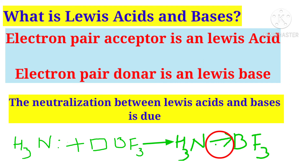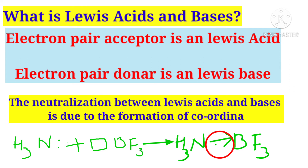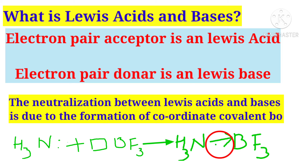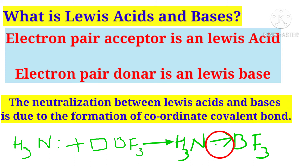For example, in NH3, the central atom nitrogen has one lone pair. This lone pair of electrons donates to the boron atom to form a coordinate covalent bond or dative bond. This is the neutralization between Lewis acid and Lewis base due to the formation of a coordinate covalent bond. Lewis acid is an electron pair acceptor and Lewis base is an electron pair donor.